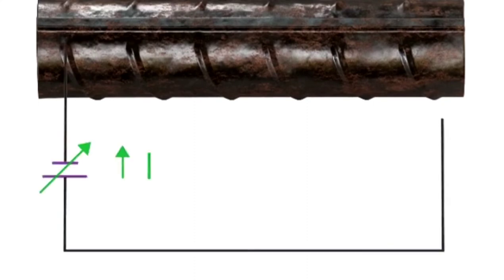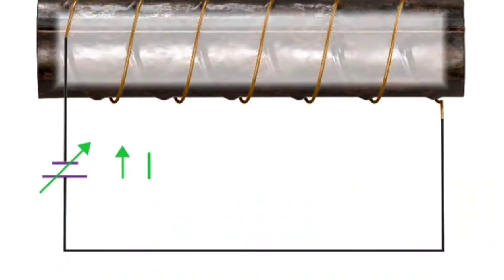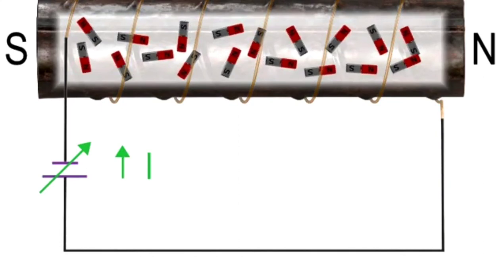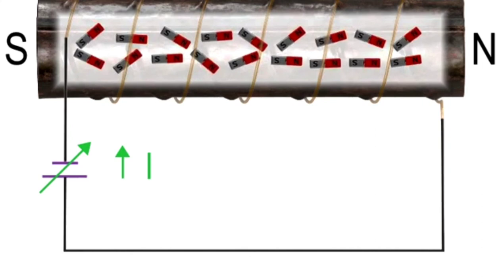When the material is brought under the influence of an external magnetic field, these domains orient themselves in alignment with the magnetic poles. This can be done by wrapping the unmagnetized material in wire and adding an electrical current.